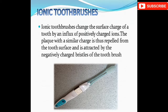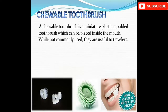Ionic toothbrushes change the surface charge of a tooth by an influx of positively charged ions. The plaque, with a similar charge, is repelled from the tooth surface and attracted by the negatively charged bristles of the toothbrush, creating an ionic exchange. Chewable toothbrushes, when chewed in the oral cavity, wipe off dental plaque and calculus.